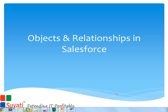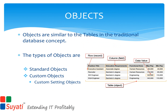Objects and relationships in Salesforce. Let's see what an object is and how to relate objects in the Force.com platform. Objects are similar to tables in the traditional database concept. A database table is simply a list of information presented with rows and columns. In the Force.com platform, we use the terms records and fields instead of rows and columns respectively.